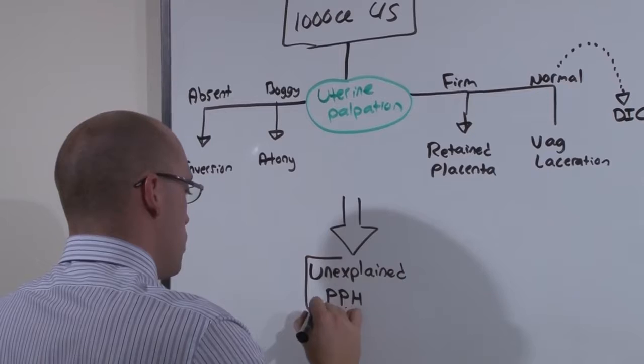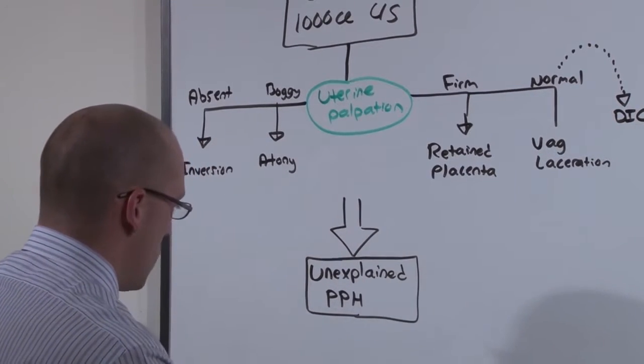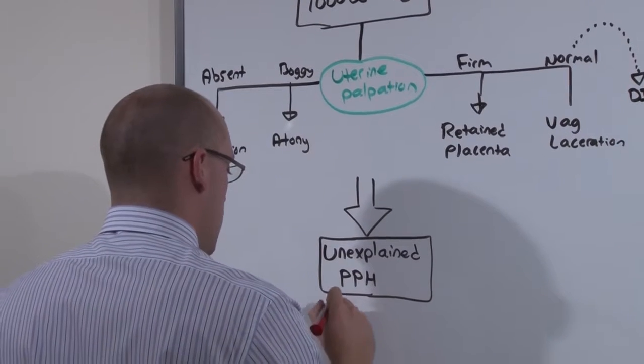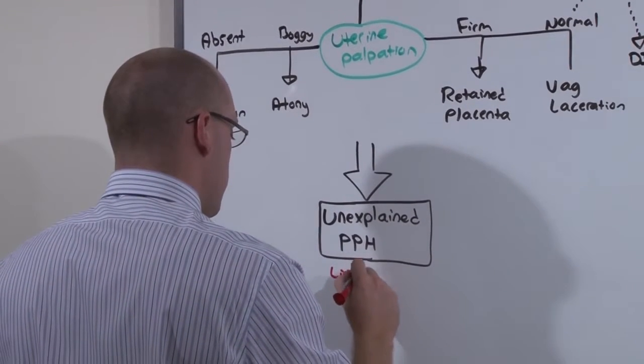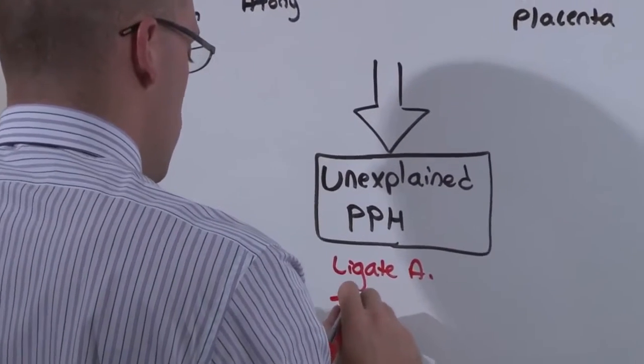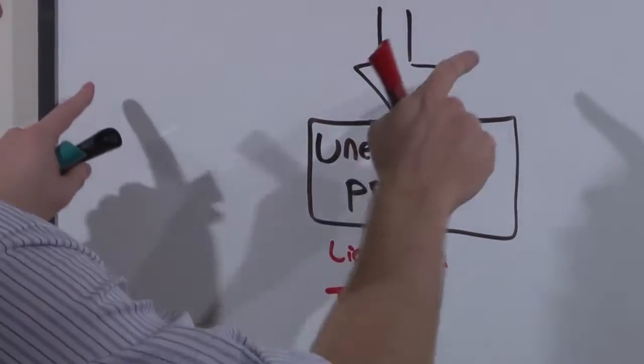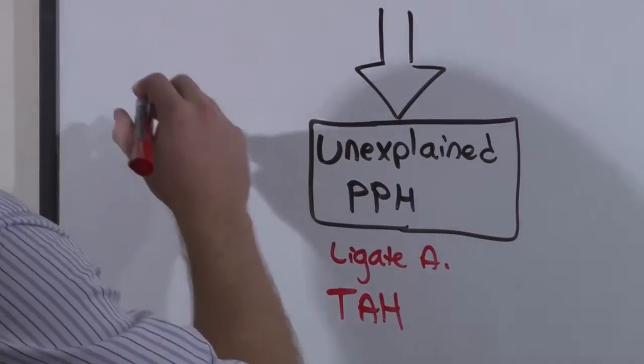If you have unexplained or severe postpartum hemorrhage, you need to do surgery to ligate arteries. And eventually, if you cannot get the bleeding to stop, do a total abdominal hysterectomy. By the way, most of these are going to be corrected with surgery.